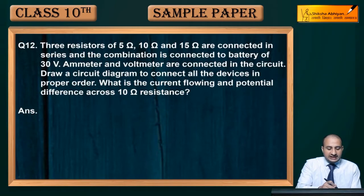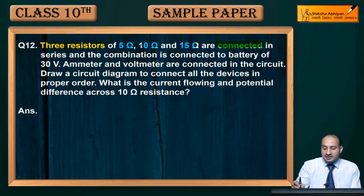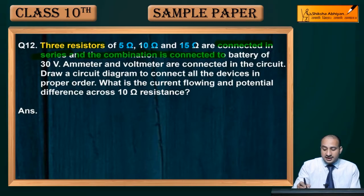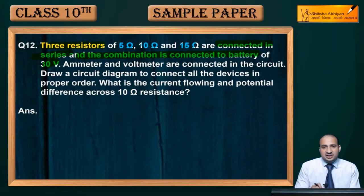Now see Question 12. Three resistors of 5 ohm, 10 ohm and 15 ohm are connected in series. And the combination is connected to the battery of 30V, and the whole combination with 30V battery is connected in series.